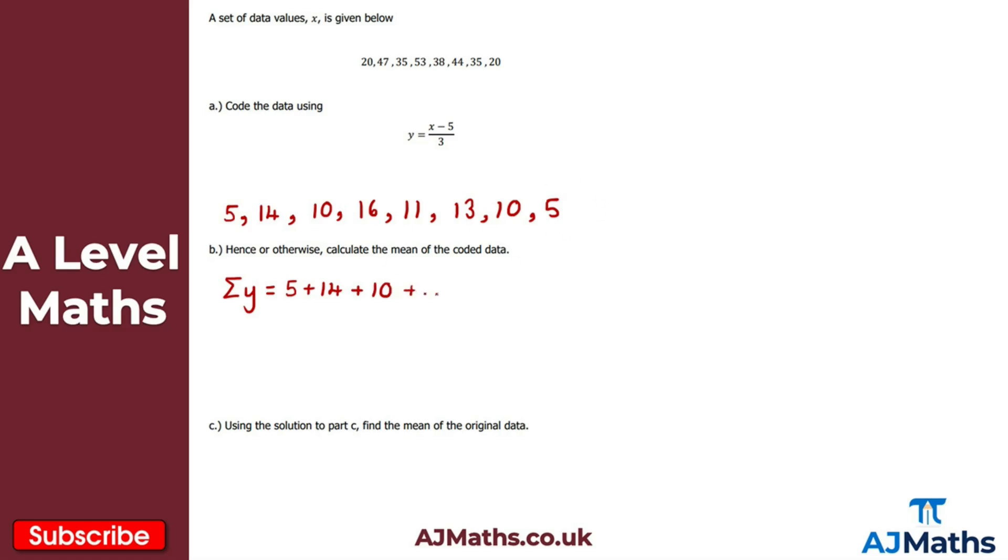That'll be my last term. What you should get if you put this into your calculator is 84. So sigma y is equal to 84. For the mean of the coded data, that'll be y bar. It's just going to be 84 divided by the total sample size, which is 8.